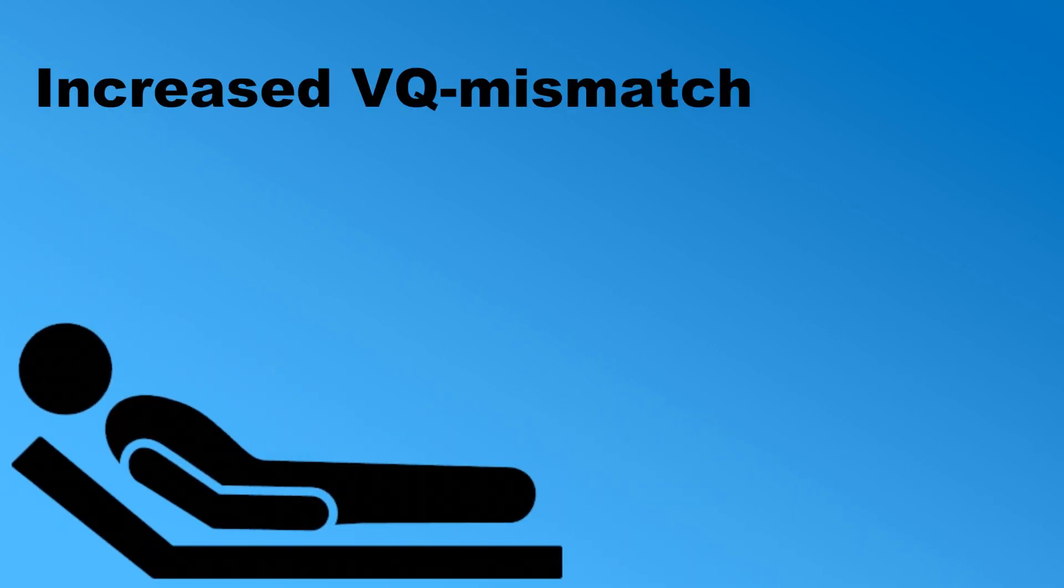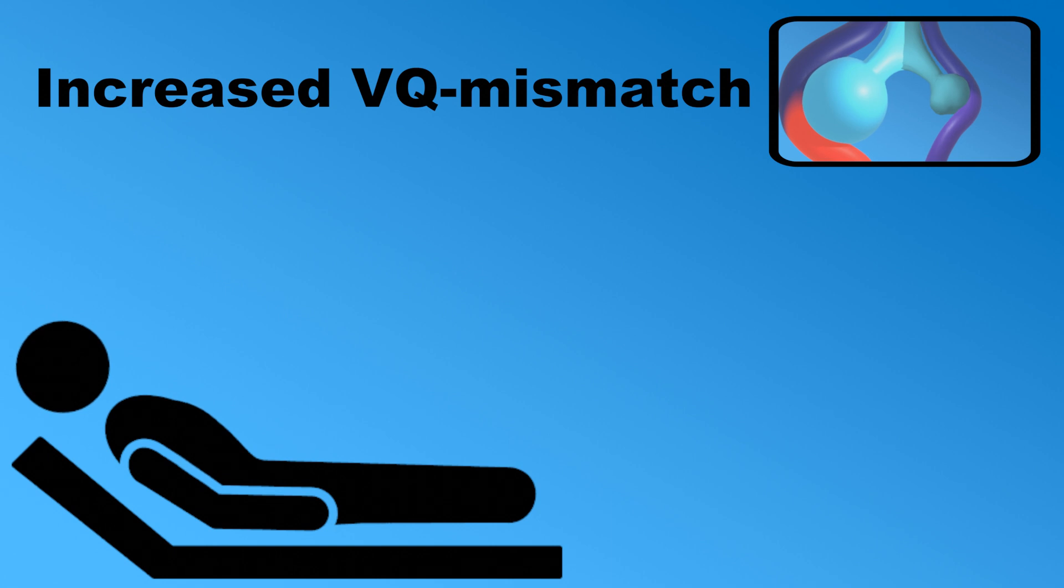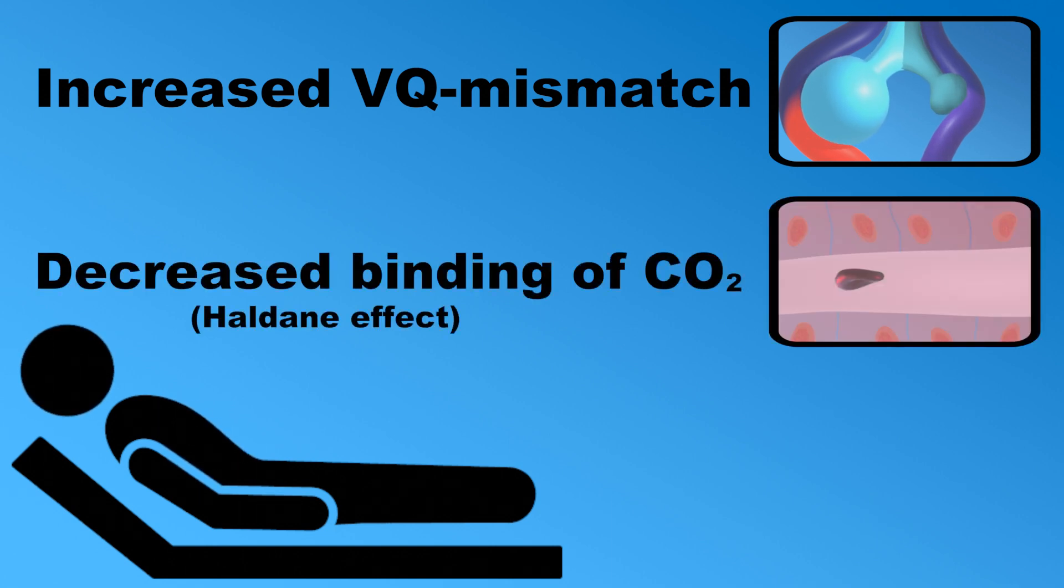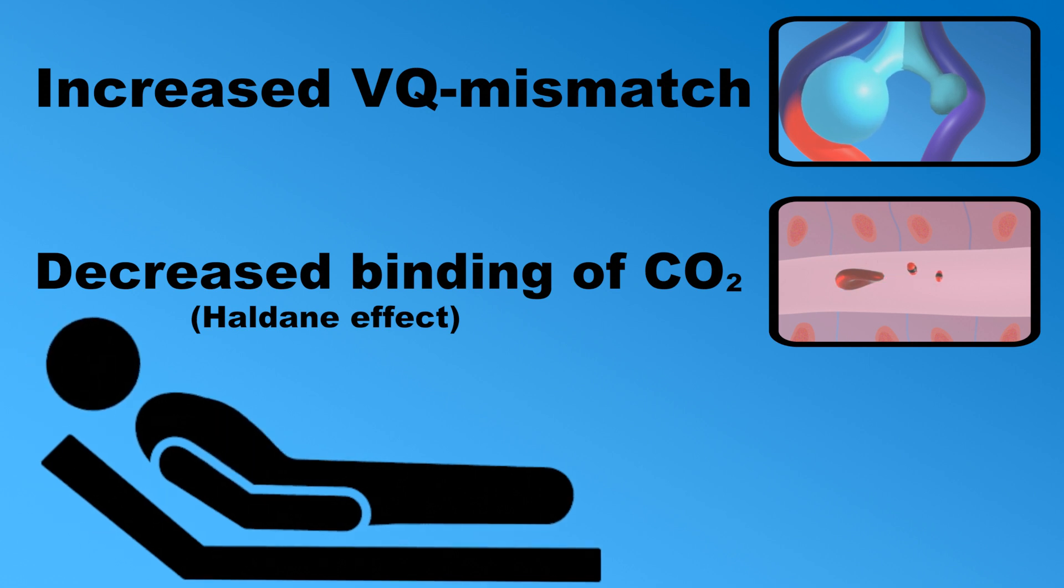So to sum it up, the main reasons for rising carbon dioxide levels in COPD patients with excessive oxygen therapy are: increased VQ mismatch because of disrupted hypoxic pulmonary vasoconstriction, and a decreased binding of carbon dioxide when oxygenated hemoglobin is increased.